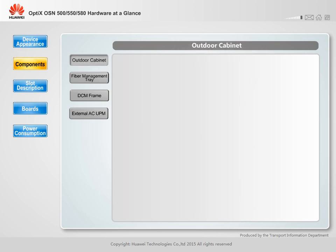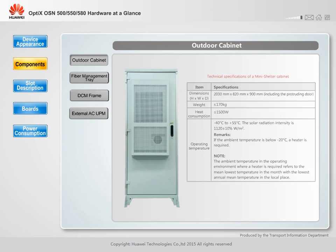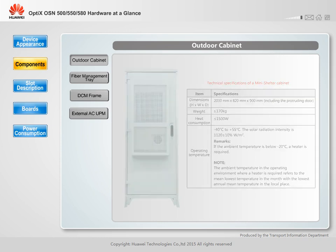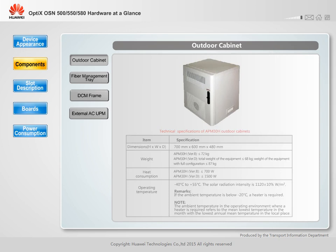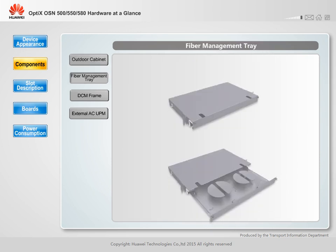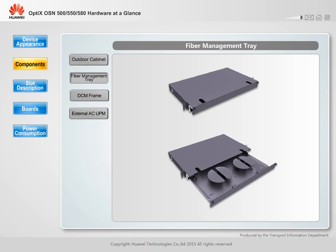Both OptiX OSN 550 and 580 can be installed in outdoor cabinets, which can be deployed conveniently. A fiber management tray can be used to coil excess fibers or jumpers of the OptiX OSN 580. A fiber management tray allows a maximum of 40 fibers to be led in, and supports a total fiber length of 50 meters.